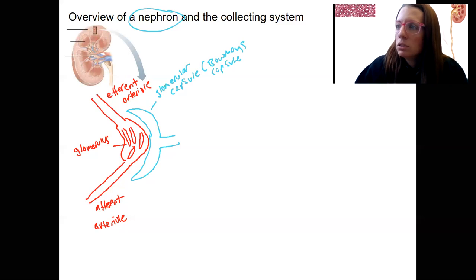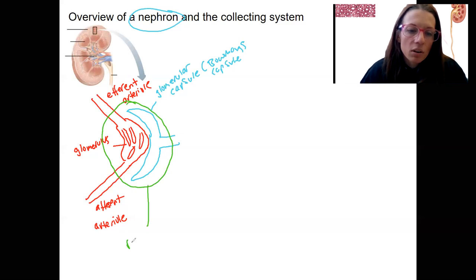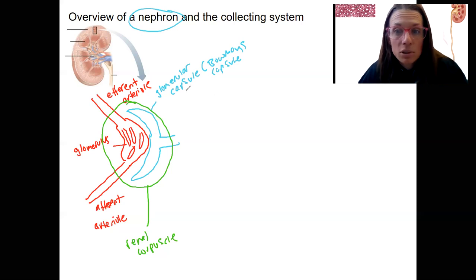I'm going to do green because I'm not going to use that again later. So this is our renal corpuscle that you'll see in lab on the histology of this. It's made up of the glomerular capsule and the glomerulus. So this is where filtration occurs, which will, of course, look at more detail.